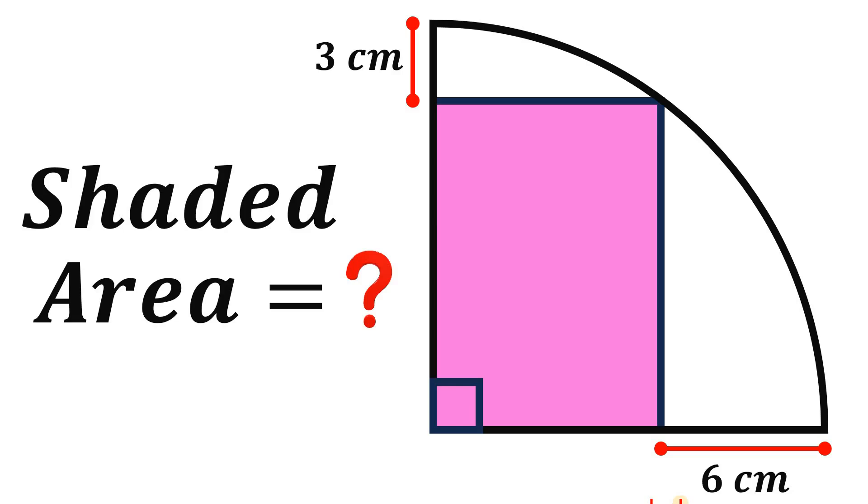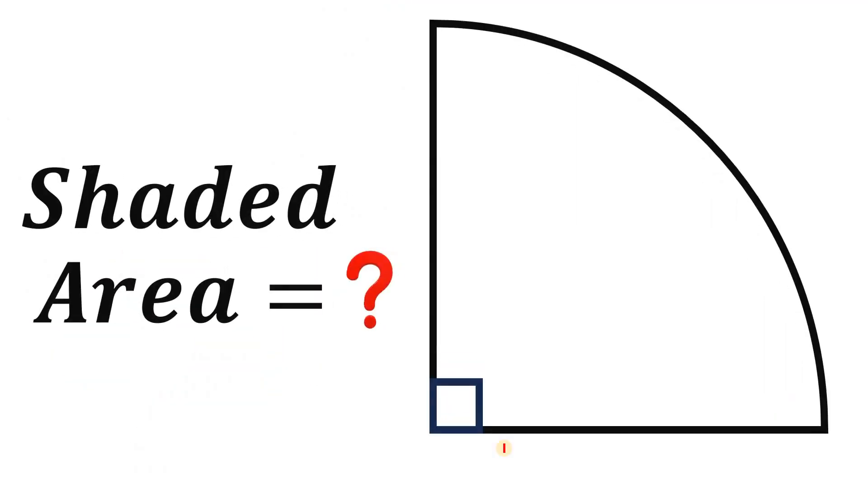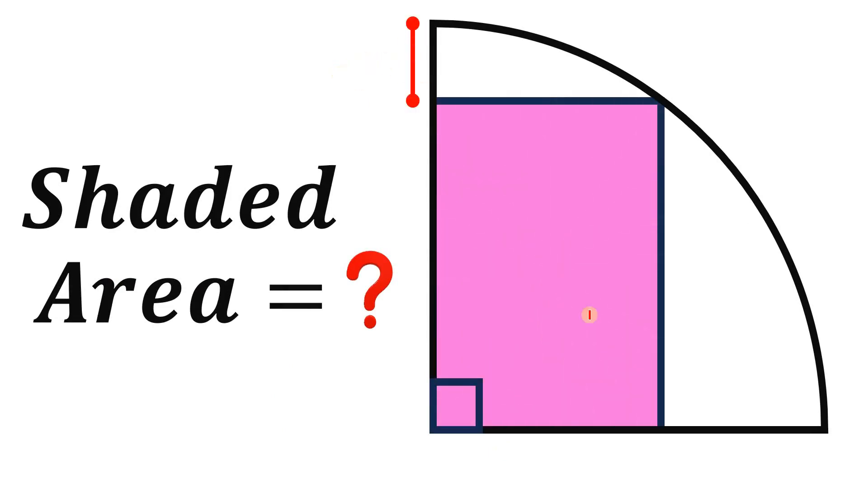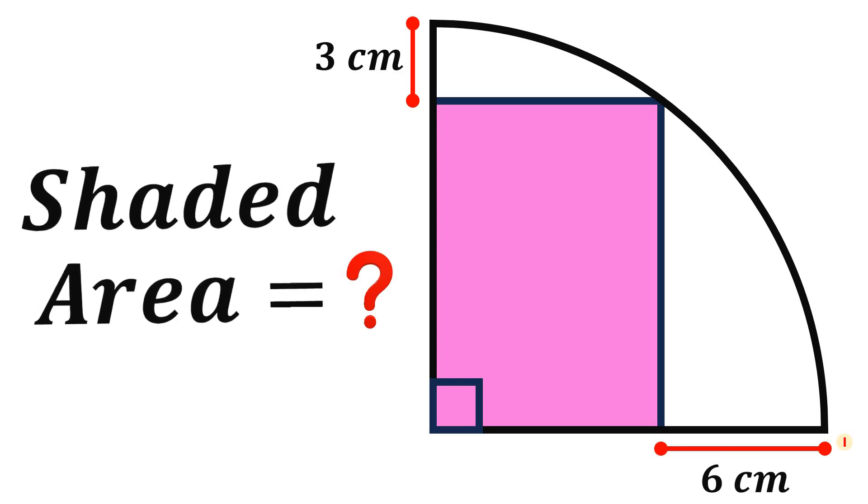Can you solve this geometry challenge? Here's the question. Let's begin with a quarter circle and let's draw a rectangle inside of it wherein this segment measures 3 cm and this segment measures 6 cm. Then our goal in this question is to find the area of the shaded region.